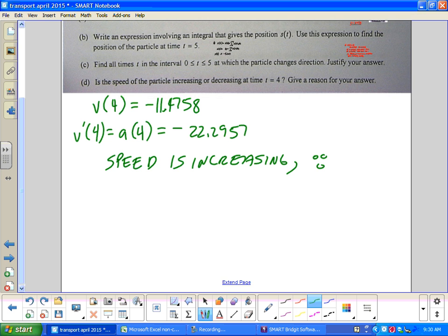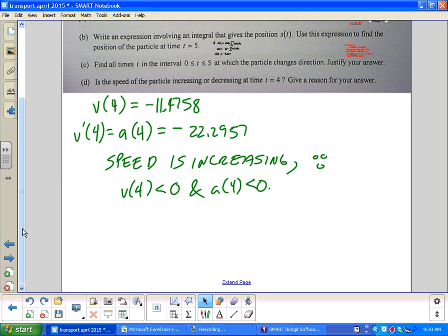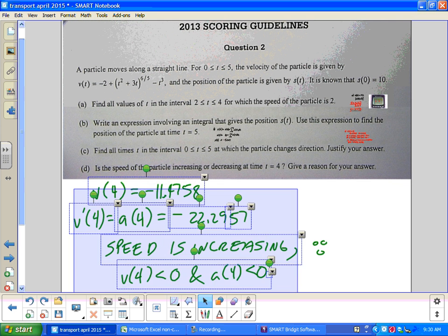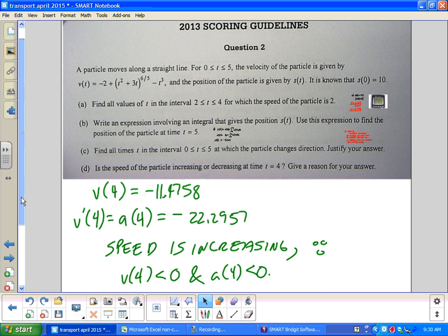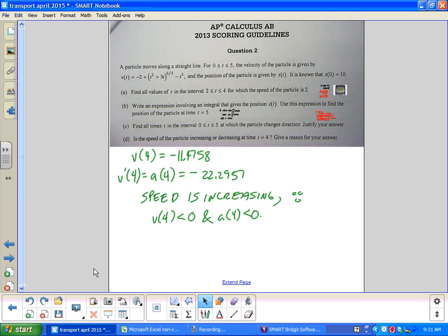Because v(4) is less than 0 and a(4) is less than 0. Boom. Two points for that whole answer. And again realizing that it has to be that way. Alright. Again that's my 2013 question 2. Guys keep practicing. AP is coming up. Understanding why is the most important part.